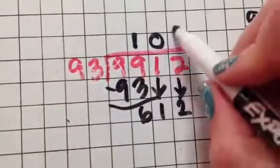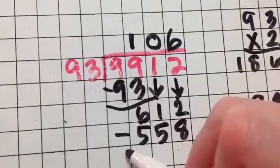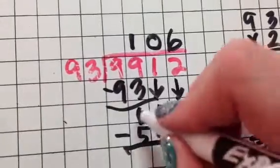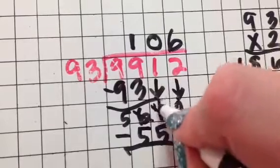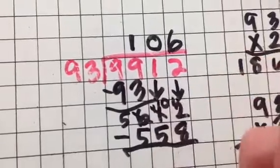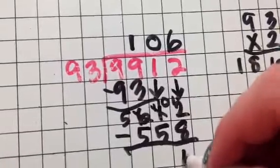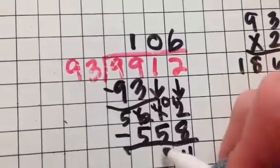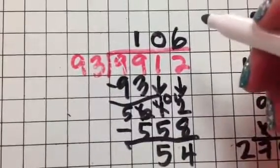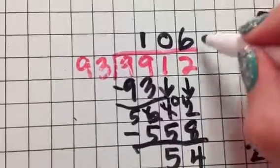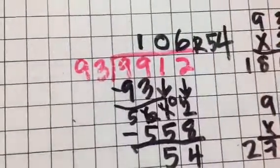Okay, so here's my problem again. Times 6, 558. And then I'm going to need to borrow, right? Bring the 1 over. But, oh, I've got to borrow from that guy to make that one a 12. So 12 minus 8 is 4, and 10 minus 5 is 5. So in this case, my answer is 106 remainder 54. Big remainder.